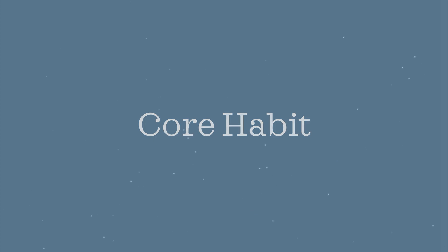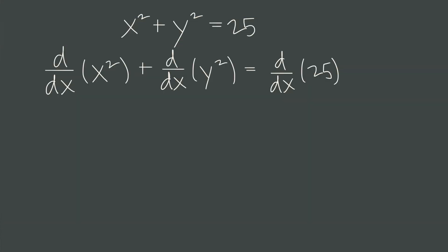So let's look at that core habit. What does it mean to multiply by y prime? When we use implicit differentiation, we take the derivative of every term on both sides of the equation separately. For x² + y² = 25, we take the derivative of x², the derivative of y², and the derivative of 25. We already know the derivative of x² is 2x, and the derivative of 25, a constant, is zero. The only new part is how to differentiate y² — that's where implicit differentiation comes in.